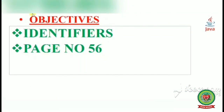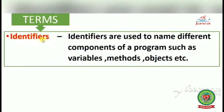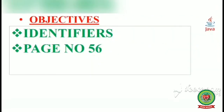So today we have discussed what an identifier is, the different rules for naming an identifier, some valid identifiers, and some invalid identifiers with their definitions. Students, revise this topic carefully, go through the examples and explanations, and in the next video we will cover the next topic. Thank you very much.